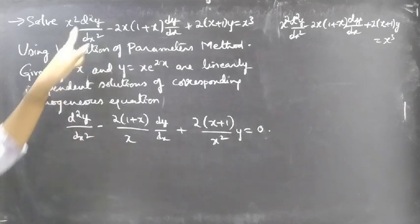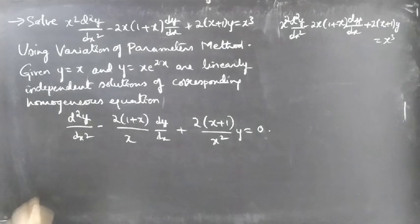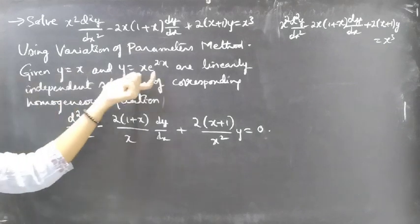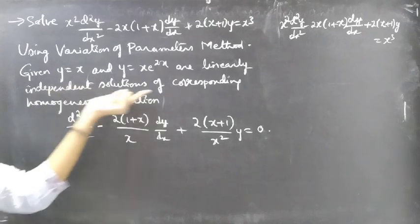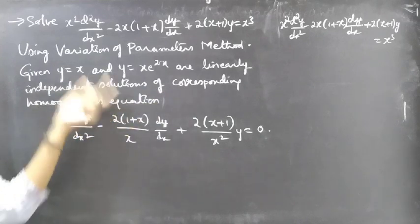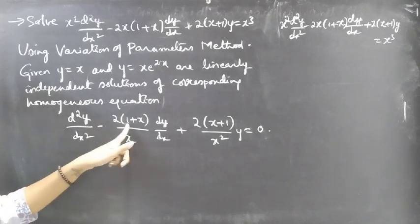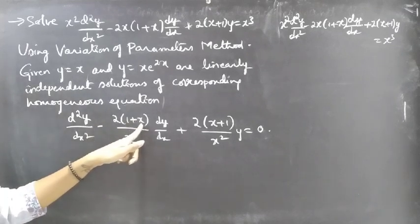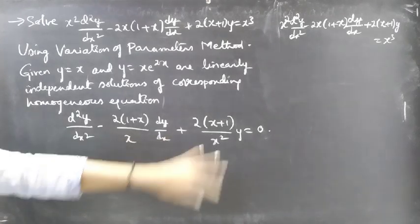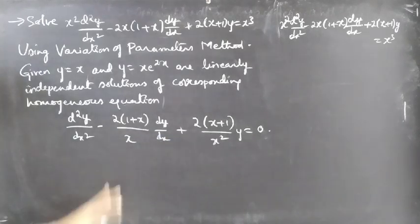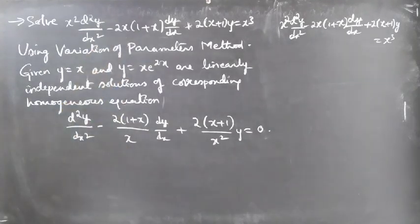Here we are given a differential equation of order 2. Using the variation of parameters method, given that y = x and y = xe^(2x) are linearly independent solutions of the corresponding homogeneous equation d²y/dx² minus 2(1+x)/x · dy/dx plus 2(x+1)/x² · y = 0.